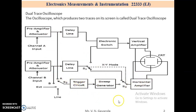The horizontal deflection system is common for both input signals or channels. The horizontal deflection system consists of a trigger circuit, sweep generator, horizontal amplifier, and horizontal deflection plates. I hope you understood. Thank you.